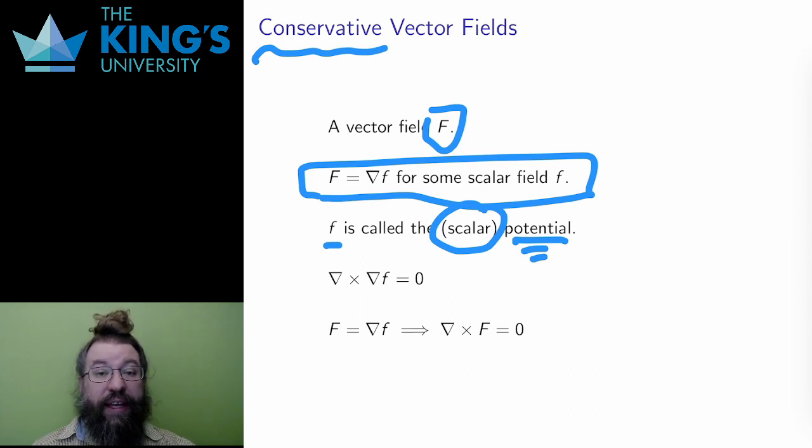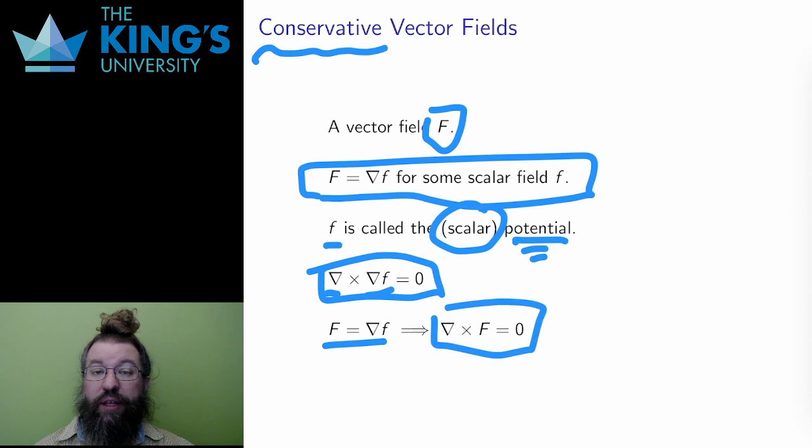That's a nice definition, and I'll get into the properties of conservative vector fields later in the week. For now, how do I check? If I have a vector field, how do I know that it is conservative? Well, from last week, I know that the curl of any gradient is zero. Therefore, if capital F is conservative, its curl will be zero. It will be irrotational.